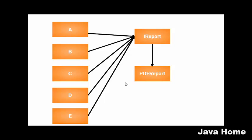Now PDF report provides the implementation of the interface Report. We modified the design by just introducing an interface, and the outside world is exposed with the interface — which is nothing but the features — and it is hidden from the implementation, which is your PDF report. The outside world doesn't have any idea what PDF report is; they just know 'I Report,' which is an interface containing only the features.